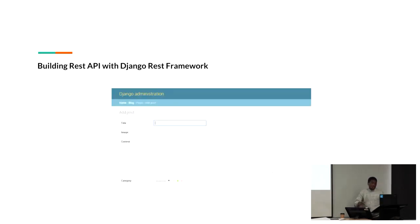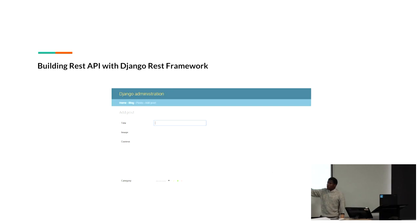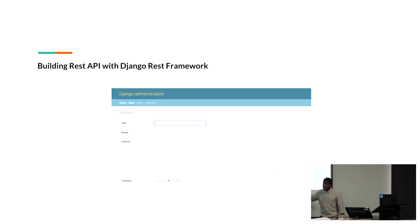As you can see, I have accessed the admin area. I typed my username and password. When I run the Django framework using python manage.py runserver, I go to localhost:8000/admin. In the admin, you see we have the same structure of what we created. For example, you can insert the title of the blog, a link for the image, the content, and we also have the category, which is a foreign key.